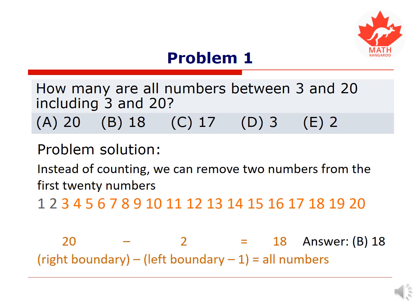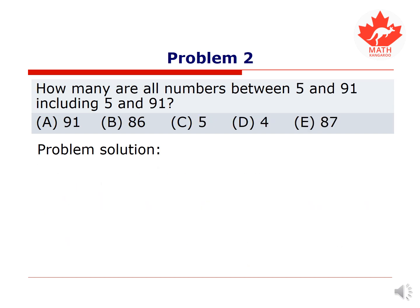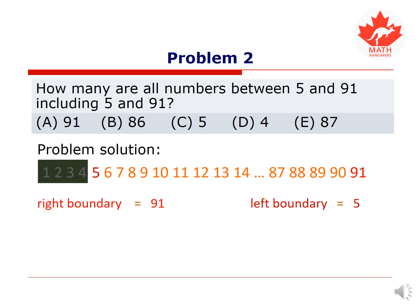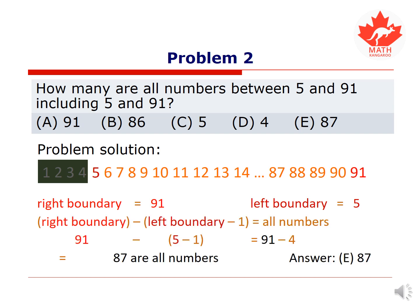What I want you to notice is that we found the right boundary 20 and subtracted from it the left boundary 3 minus 1, which is 2 numbers in front of 3. This problem is very similar: how many are all numbers between 5 and 91, including 5 and 91? We find the right boundary 91, the left boundary is 5. We subtract 4 from 91 and this gives 87. The answer is 87.